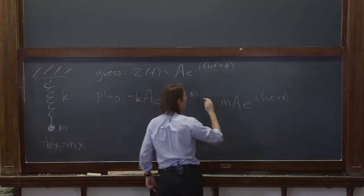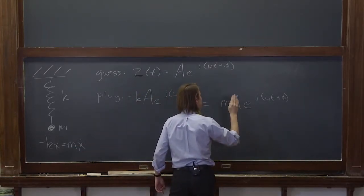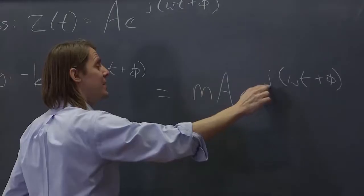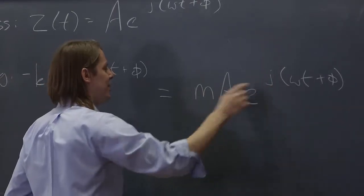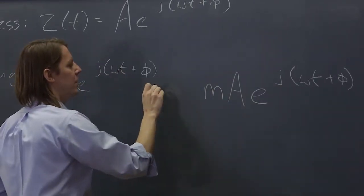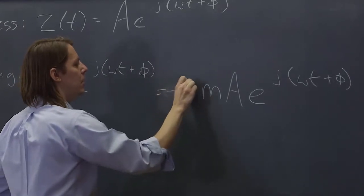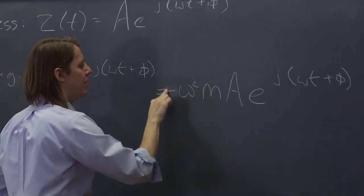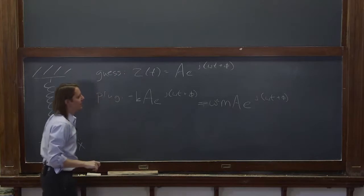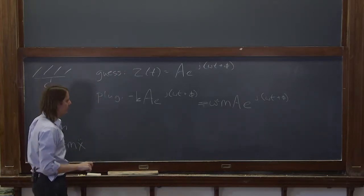Oh, but we do it twice, because it's two derivatives. So if we bring j omega down twice, that's j squared omega squared. That's negative omega squared, because j squared is minus one, minus omega squared. So when you put it all together, there you are, minus omega squared m, a, e to the j omega t plus phi.